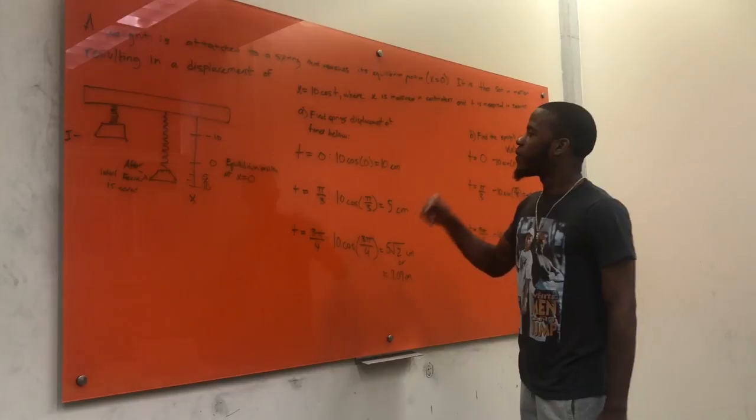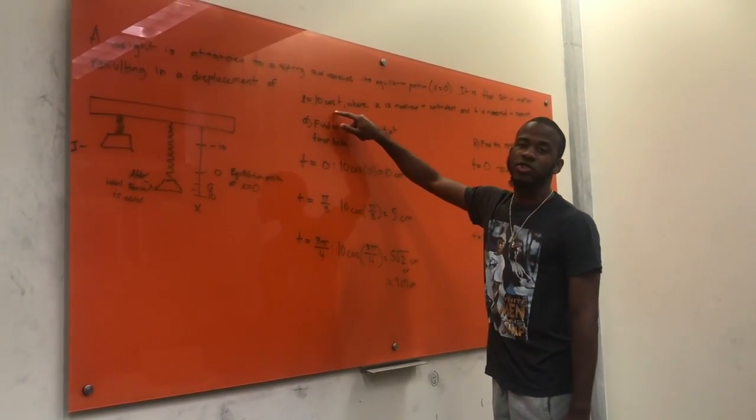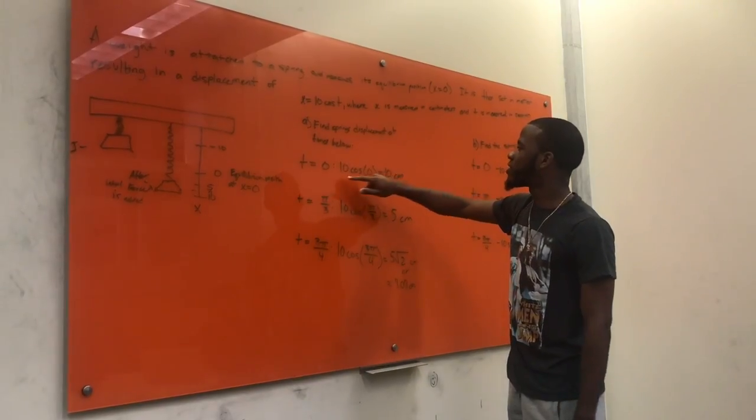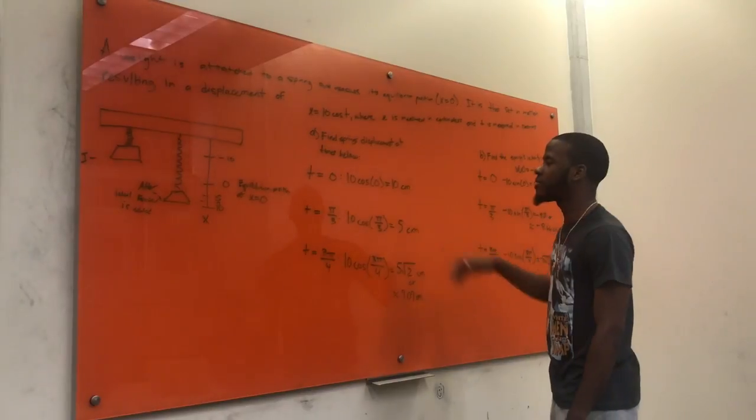Alright, so what we did, we took the times t and we plugged it in the initial equation. The initial equation was 10 cosine t, so we plugged in t equals zero for 10 cosine zero. That's when we got 10 centimeters.